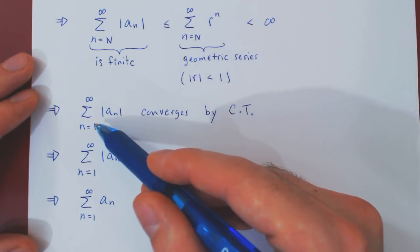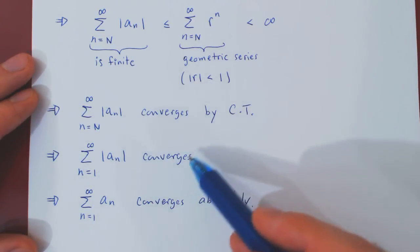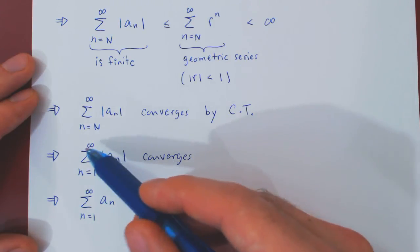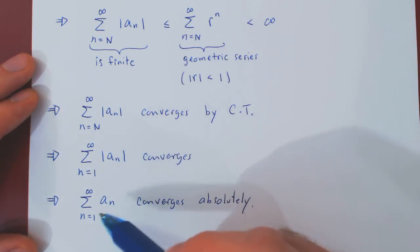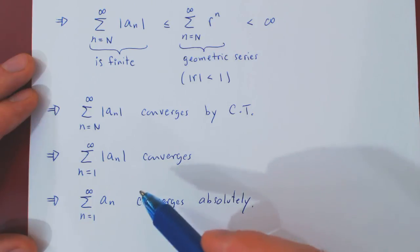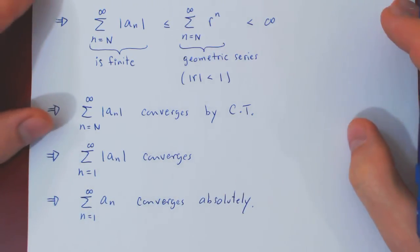Meaning the first few terms of a series will never affect convergence, so the series beginning at 1 also converges, but if a series of terms in absolute value converges, so does the series without the absolute value. Which shows that the series converges absolutely. And that's it.